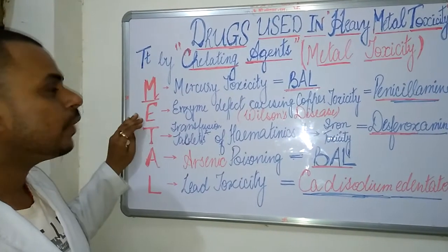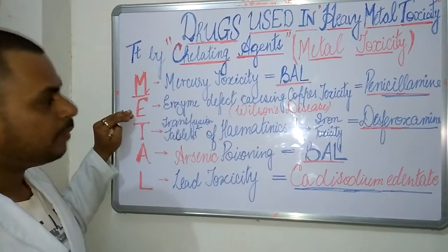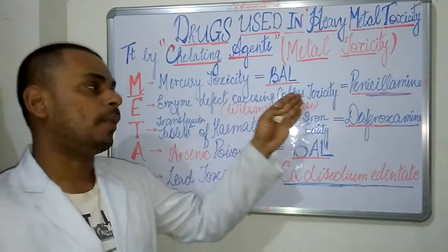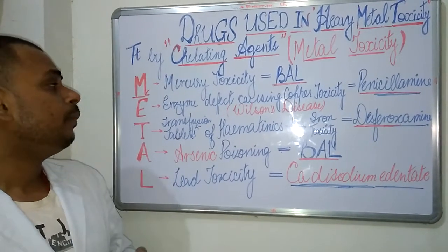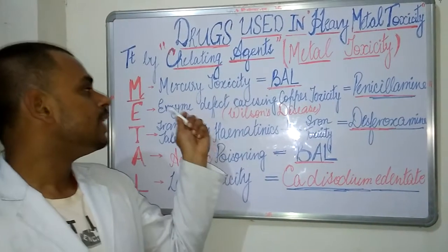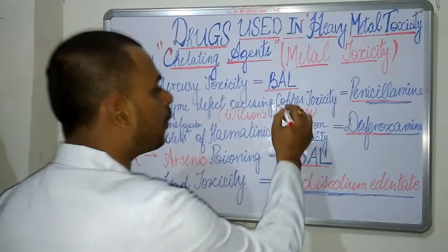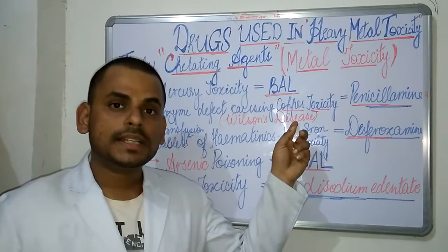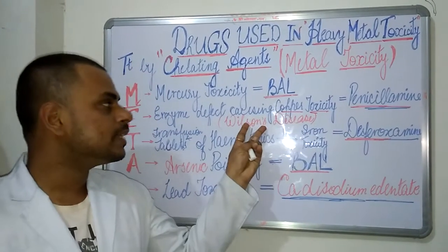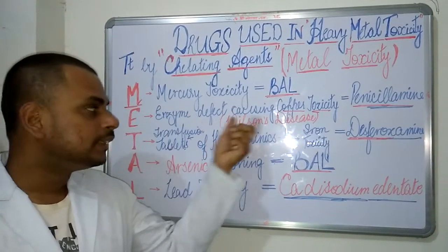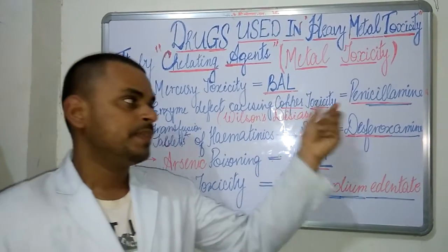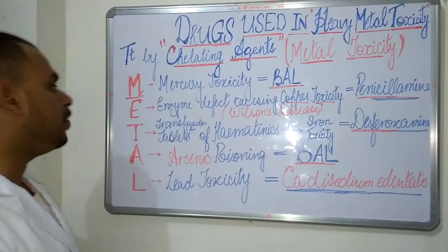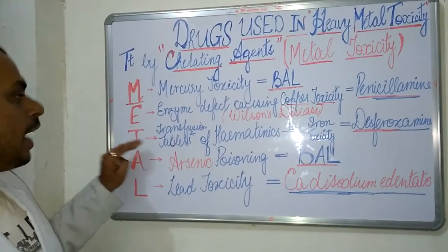The E of METAL corresponds to the enzyme defect causing copper toxicity, which is famously known as Wilson's disease. Wilson's disease occurs due to copper toxicity, and the drug of choice here is penicillamine.